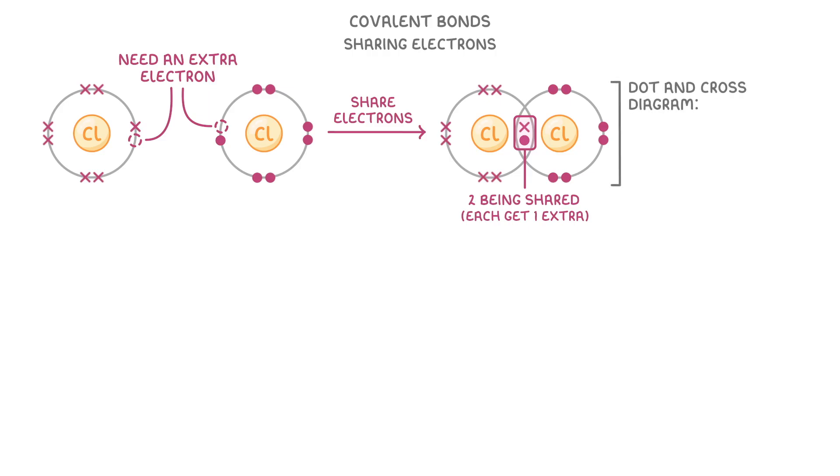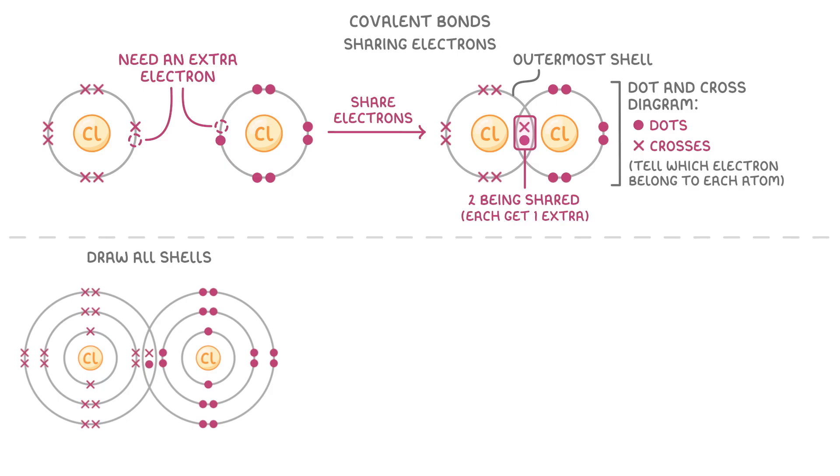When you do these you need to make sure that you draw one of the atoms with dots and the other with crosses so that we can tell which electrons belong to each. Also, even though we've only drawn the outermost shell of each atom here, you might sometimes have to draw all of the shells. Just make sure you check the question to see what they want.